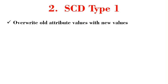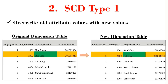The second type is type 1. With type 1, if there is any change in any of the attribute values, old values in the dimension are overwritten with the new values. The attribute values always reflect the most recent information, and no history is kept. For example, if employee name Bill Lyon changes, instead of tracking the old name, we replace it with the new name, Bill Tiger.